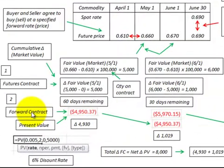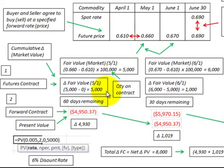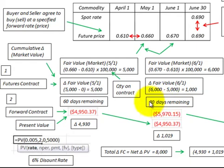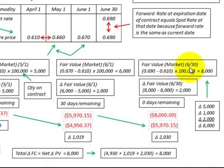To determine the fair value of a forward contract, we have to discount the fair value for each period back by the days remaining in the contract. For May 1st, with 60 days remaining to June 30th, we discount the $5,000 at a 6% discount rate, giving a present value of $4,950. For June 1st, with 30 days remaining, discounting the $6,000 at 6% gives $5,970. For the last period, June 30th, there are 0 days remaining so no discounting is required and its value is $8,000.